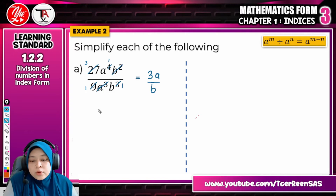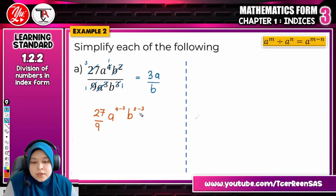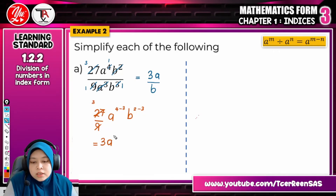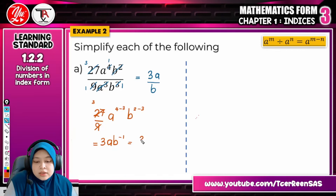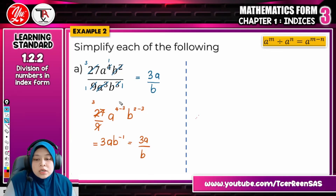To make sure you understand, let me show you another way to do it. That is 27 divided by 9, then A to the power of 4 minus 3, and B to the power of 2 minus 3. The final answer is 3A to the power of 1 and B to the power of negative 1. You will learn further about negative index form — it means that B is placed at the denominator. Both methods are correct; the teacher just wants to show the proper way.